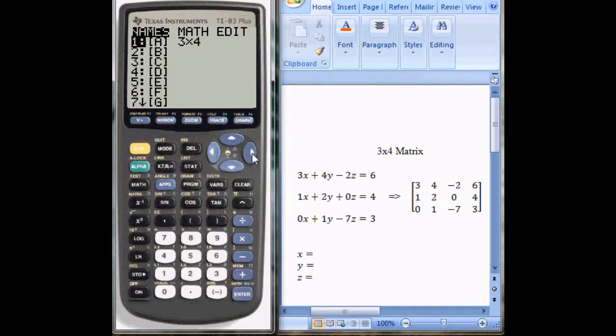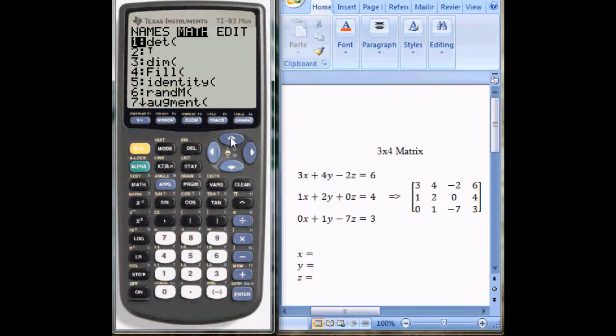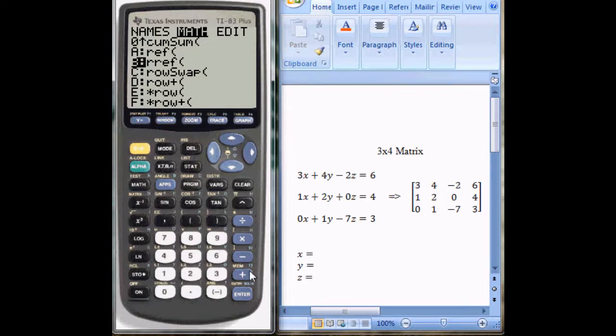Move one to the right with your right arrow key under math. Press the up arrow and move up until you find reduced row echelon form, RREF.